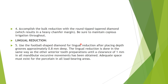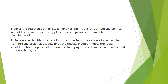For lingual reduction, a football-shaped diamond bur can be used, but use it cautiously as it can reduce too much. A depth of 0.8 mm is placed, and there must be a clearance of 1 mm in all mandibular excursion movements — lateral, protrusive — ensuring smooth gliding so the restoration can bear proper load.